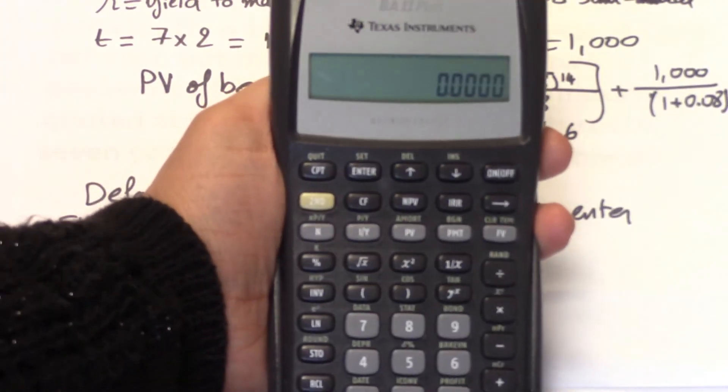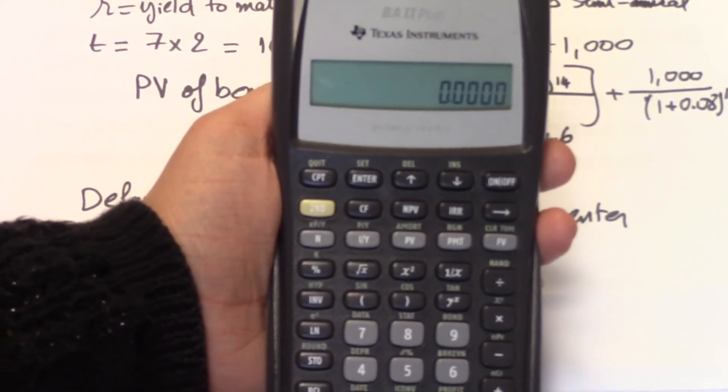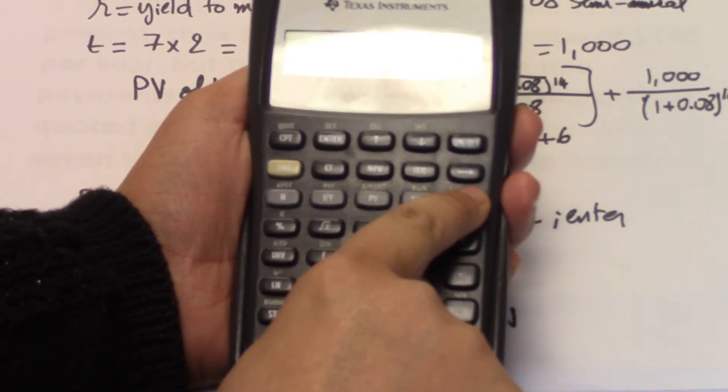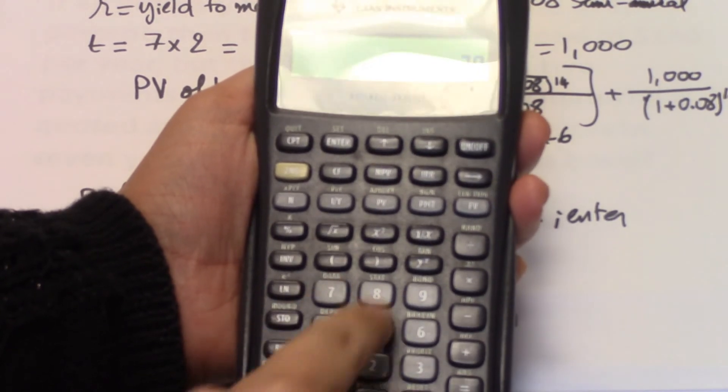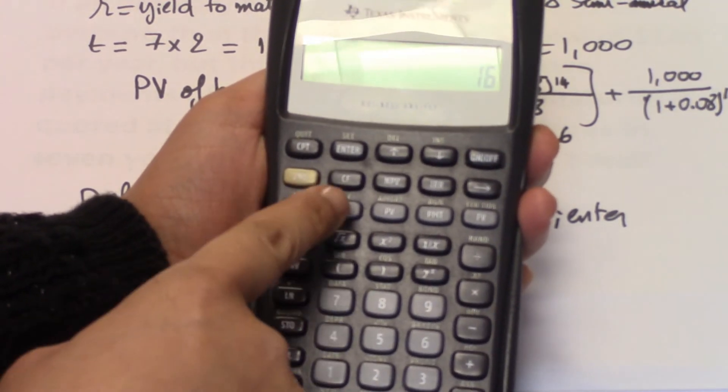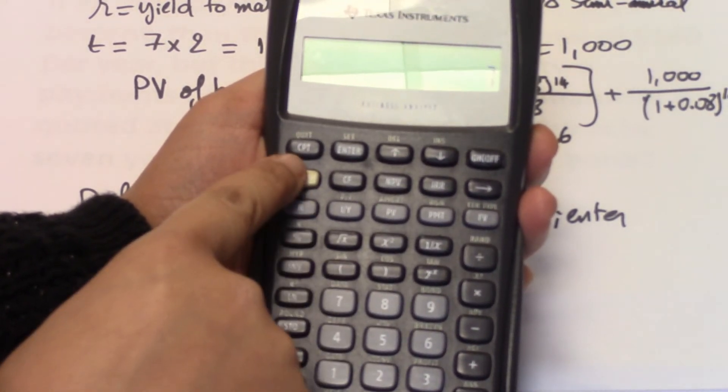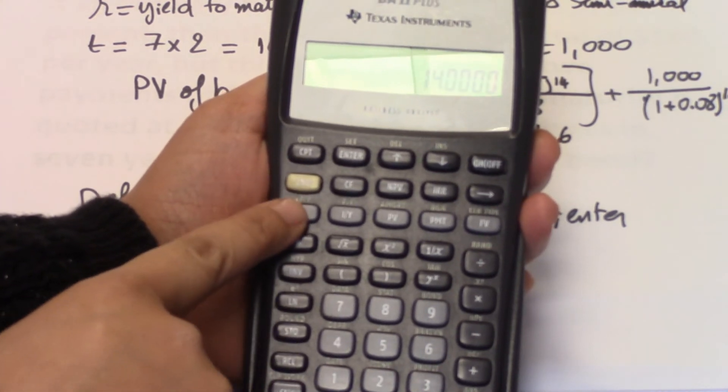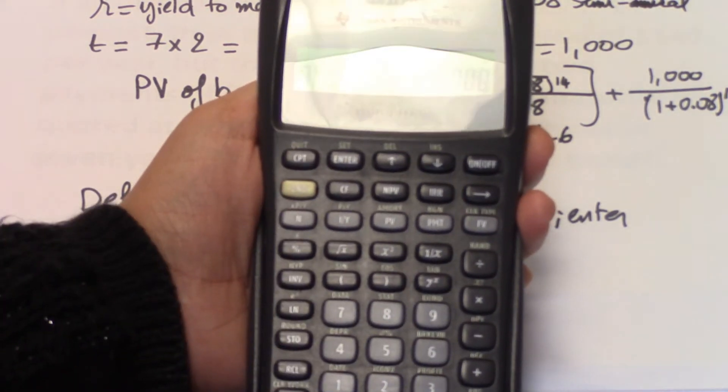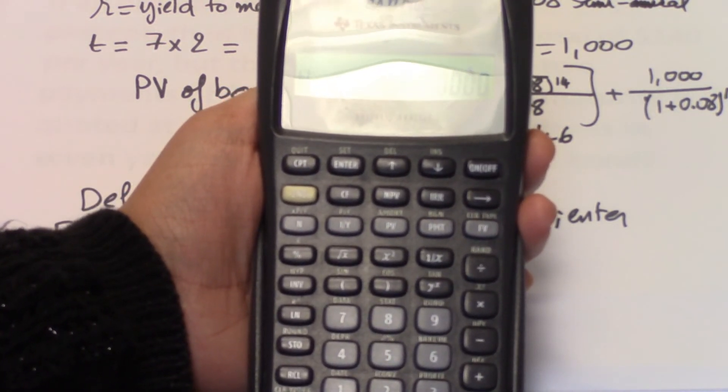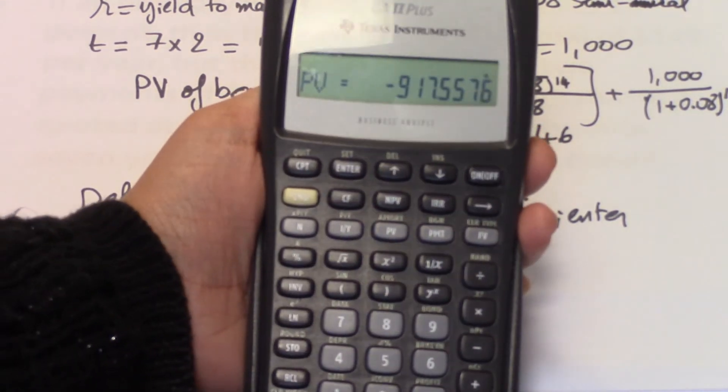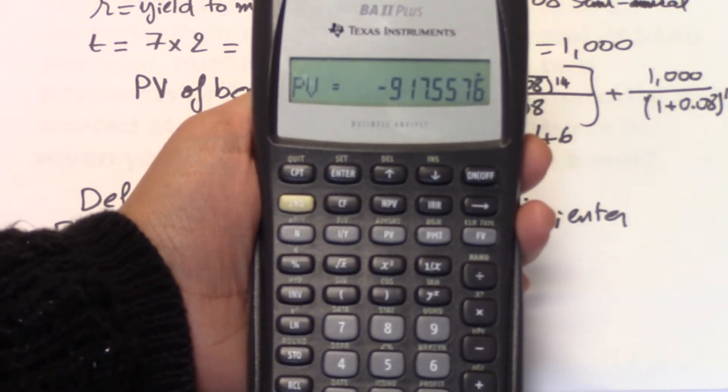So the calculator is already set to semi-annual frequency. And now we need to input our numbers. So $1,000 is the future value. $70 is the payment. 16, remember, we keep it as an annual number, is the I over Y. And then seven second N. It's going to double it because the calculator is already set to semi-annual. And so you hit it again. You hit N again, second time to enter it into the time value of money keys. And then you compute PV. And we got a present value of 917.55.